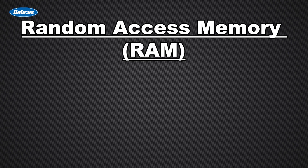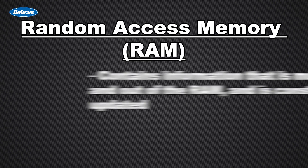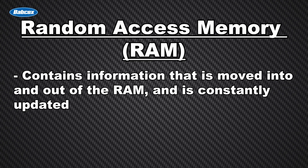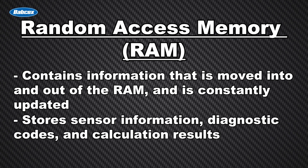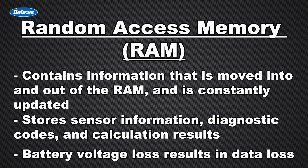Random access memory, or RAM, contains the information that is moved into and out of the RAM and is constantly updated. Sensor information, diagnostic codes, and calculation results are stored in the RAM. A loss of battery voltage will result in lost data.